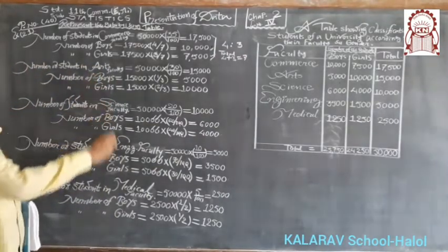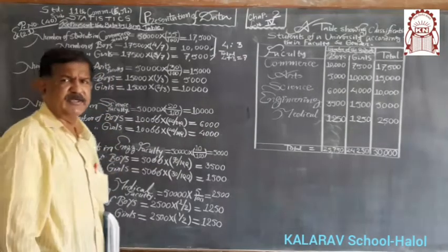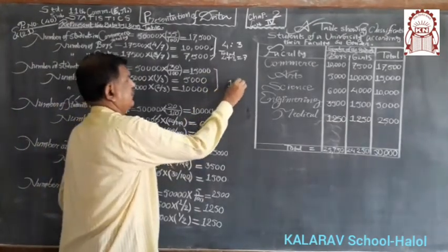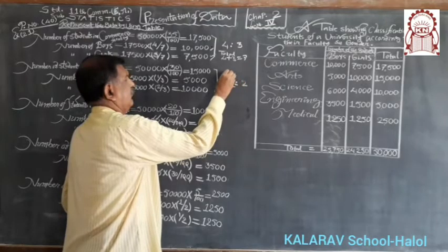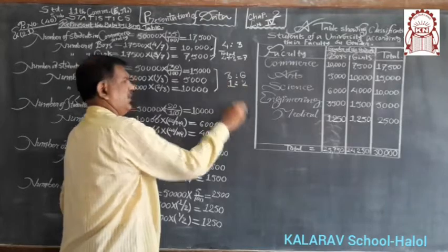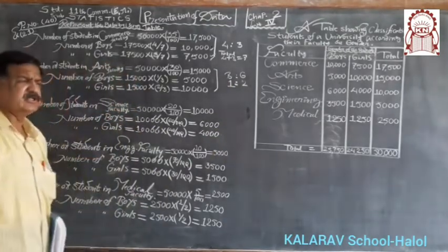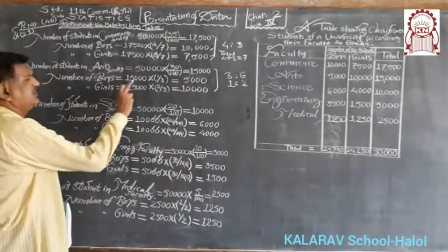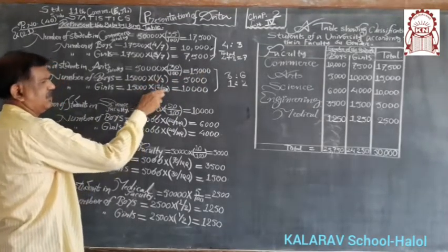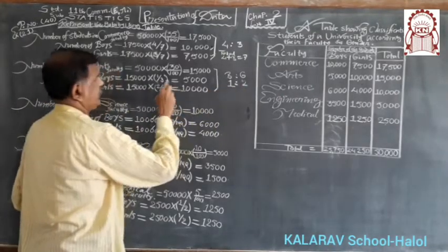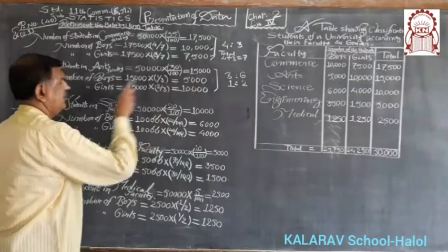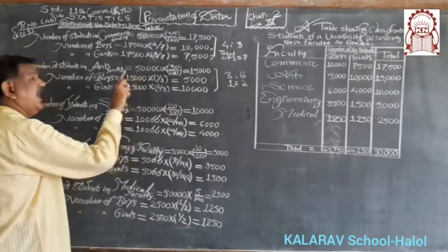In arts faculty, the number of girls is double that of boys, meaning the ratio is 1 to 2 for boys and girls. Total ratio is 3. Therefore, number of boys equals 15,000 into 1 by 3, giving 5,000. Number of girls equals 15,000 into 2 by 3, giving 10,000 in arts faculty.